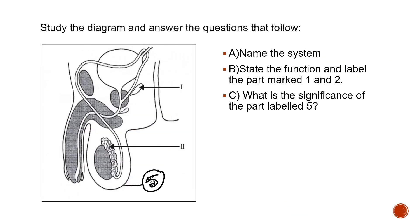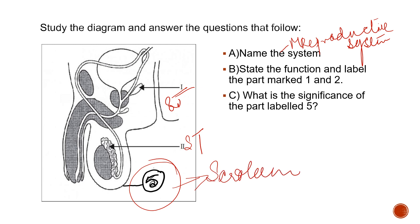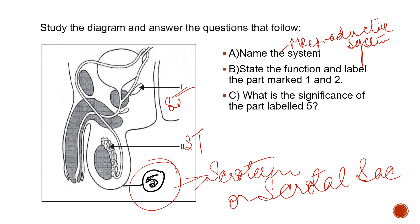The next question asks you to study a diagram and answer the questions that follow. The system shown is the male reproductive system. State the function and label the parts marked 1 and 2 — part 1 is the seminal vesicle and part 2 is the seminiferous tubules. Part 5 is the scrotum or scrotal sac — you already know its function from the earlier discussion. Please practice the functions of the seminal vesicle and the seminiferous tubules.